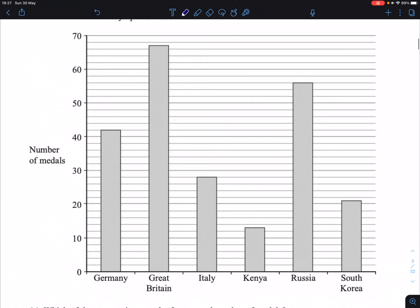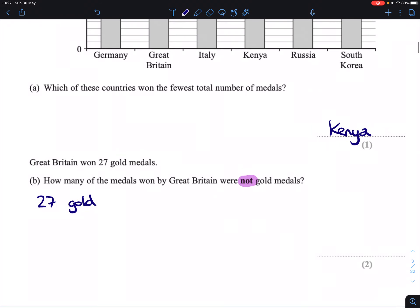Great Britain being this bar here, we want to figure out how many medals that marking is. Well, each of these little markings goes up in twos, that's 62, 64, 66, 68, 70. The fact that we're halfway in between here means that this is going to be 67. So we have 67 medals in total, take away the 27 gold, which gives us 40 medals left over.